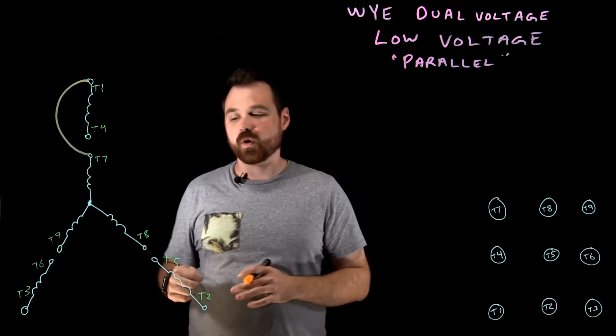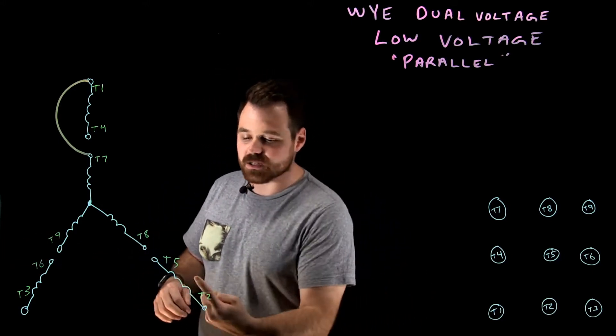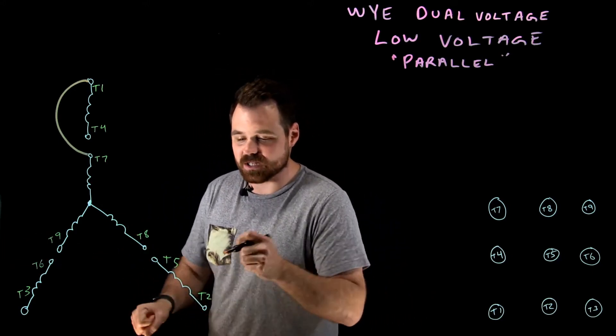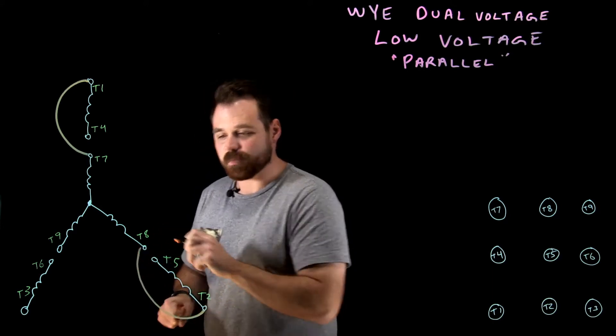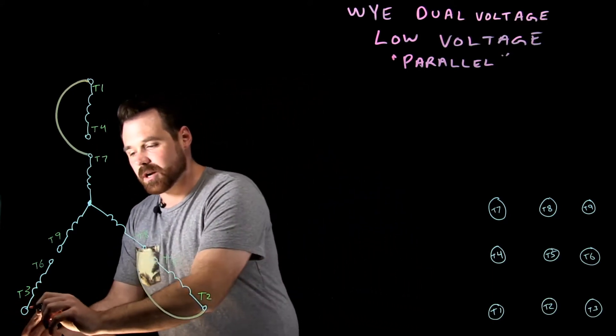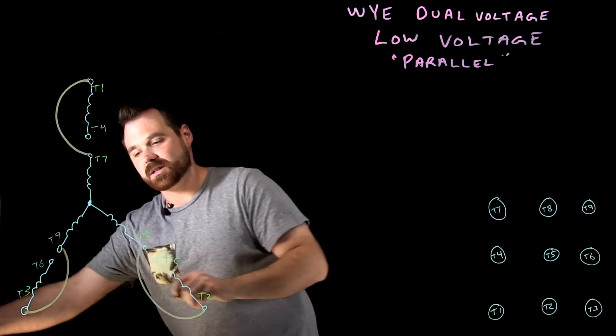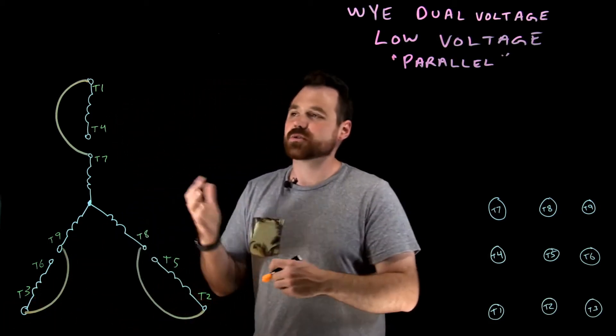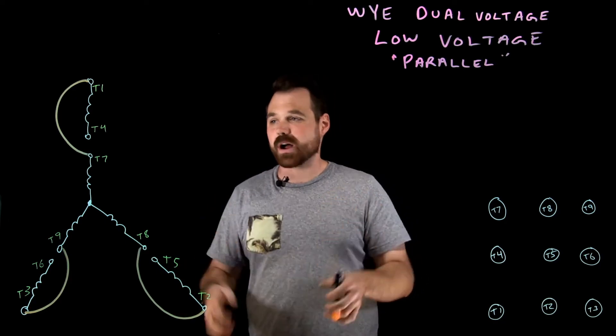Then we're going to do the same thing around the whole motor. If current is flowing into T2, I also want it flowing into T8, so those are in parallel. Same thing here - current flows into T3, and I also want it to flow into T9 at the same time, so those are in parallel as well.